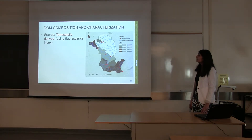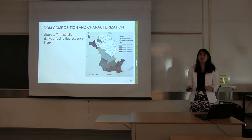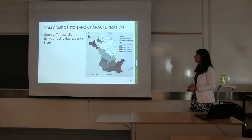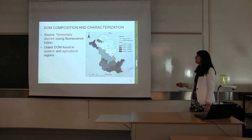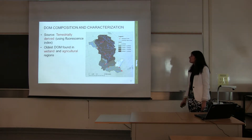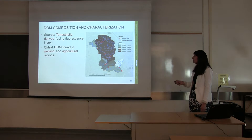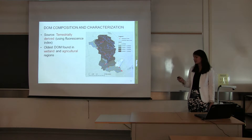The freshness index compared the age of DOC and DOM. Lighter colors represent regions of older DOM, while darker colors represent younger DOM. The oldest DOM was found in the agricultural and wetland areas, whereas the youngest DOM is found in the residential areas. SUVA results showed higher aromaticity of carbon compounds in agricultural and wetland dominated areas, with less complex carbon structures found moving downstream.